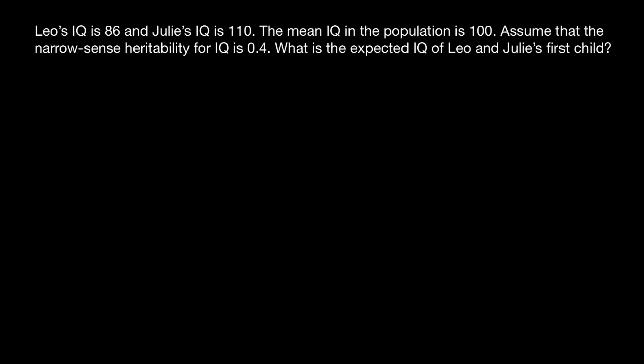Here's a problem: Leo's IQ is 86 and Julie's IQ is 110. The mean IQ or intelligence quotient in the population is 100. Assume that the narrow-sense heritability for IQ is 0.4.